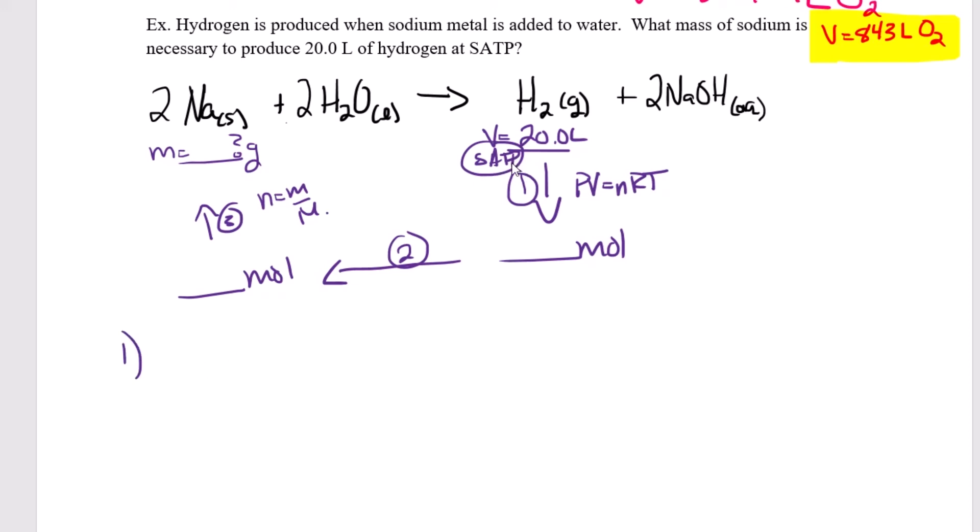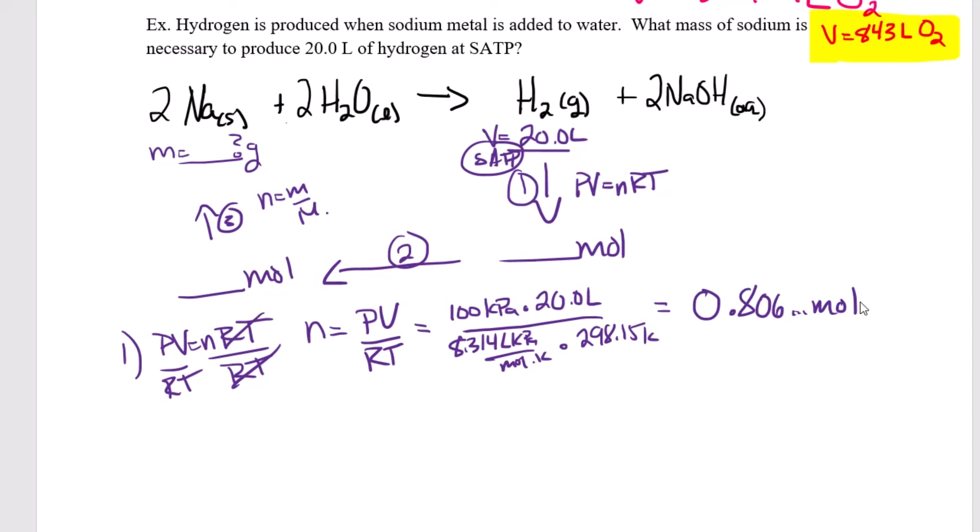Okay, let's do it. So step one, I'm looking for moles. So I need to get little n by itself. That means I need to divide by RT on both sides. N is equal to PV over RT. So we just looked up these values for SATP, so we don't need to do it again. Pressure at SATP is 100 kPa. The volume is 20.0 liters. R is 8.314 liters kPa per mole kelvin. So that gives me 0.8 moles of hydrogen.